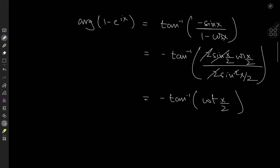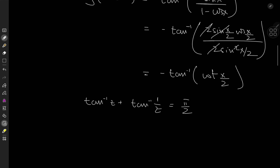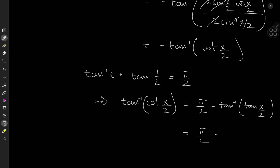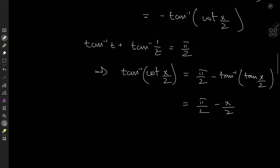That's awesome because we can simplify arctangent of cotangent of x/2 by recalling that arctan(z) plus arctan(1/z) equals π/2. So setting z equal to tangent of x/2, we get arctan(cot(x/2)) equals π/2 minus arctan(tan(x/2)). The tangent and arctangent cancel out, yielding π/2 minus x/2. With the negative sign outside, the argument of 1 minus e^(ix) is x/2 minus π/2.